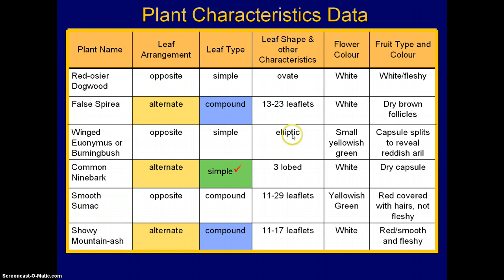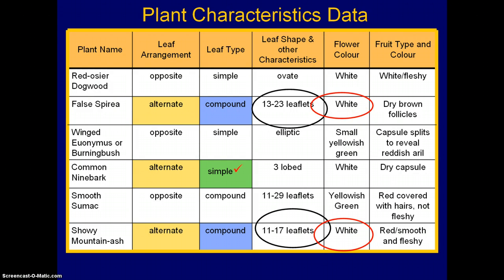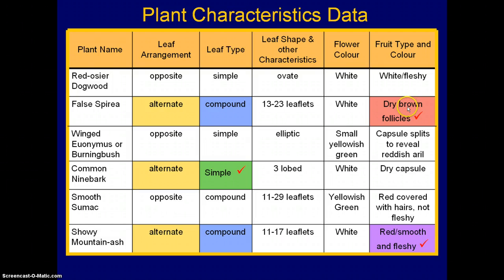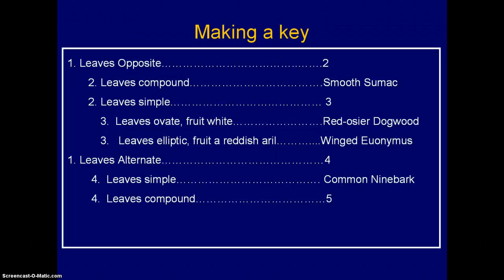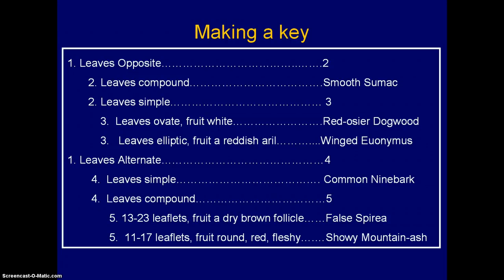One of the ways of differentiating these is the number of leaflets, but there is overlap between those numbers so that's not clear-cut enough. Flower colors are the same, so that doesn't work either. In the end, what we will choose is the fruit type combined with the leaflet count. So we can build that into the key: number 5, 13 to 23 leaflets, fruit a dry brown follicle — false spirea; or 11 to 17 leaflets, fruit round, red, fleshy — showy mountain ash.